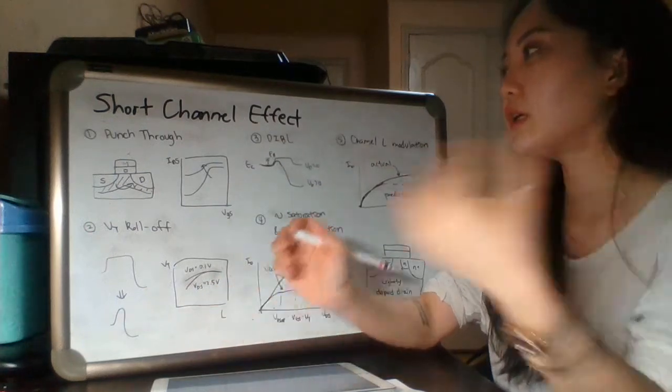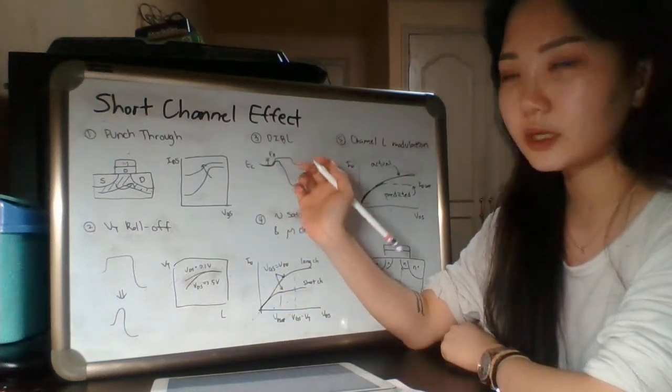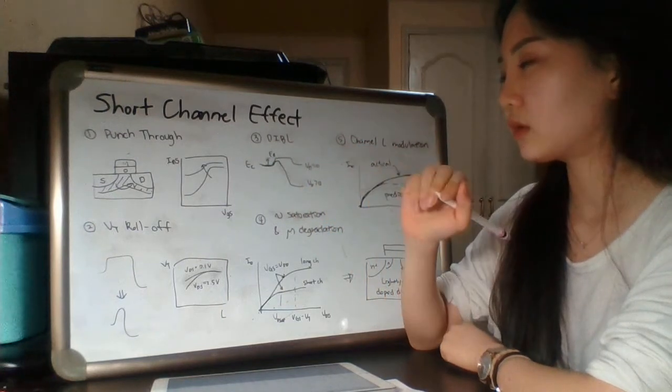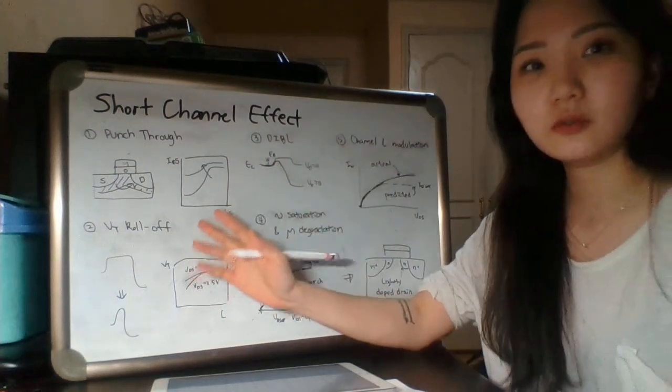Third is drain-induced barrier lowering, called DIBL. It's similar to VT roll-off.